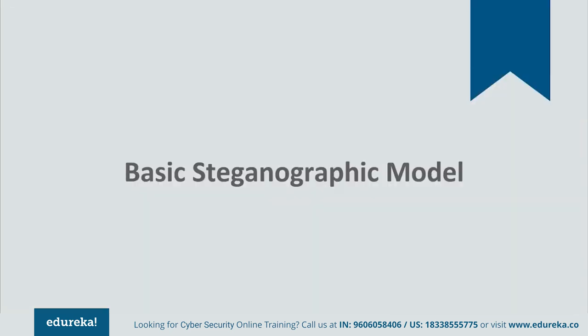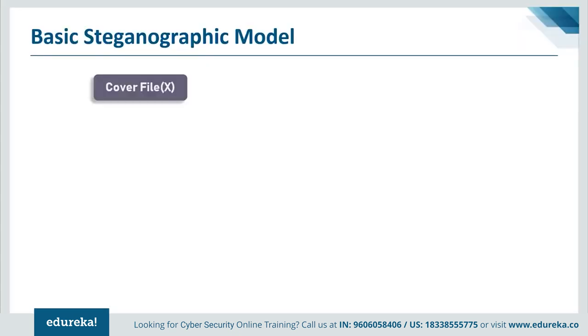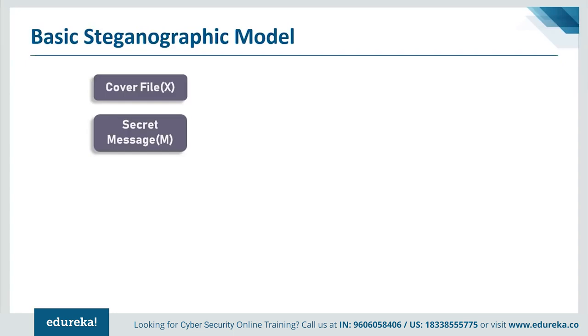So far we've covered what steganography is, a bit about its history, and its types. Now let's go through a basic steganography model. Before we start, we should be aware of a few technical terms. We have the cover object or cover file — the file used to hide information, which could be image, video, audio, or network. Then there is the secret message — the information we want to hide into the cover object. Sometimes you also have a stego key, which we'll explain as we encounter it.